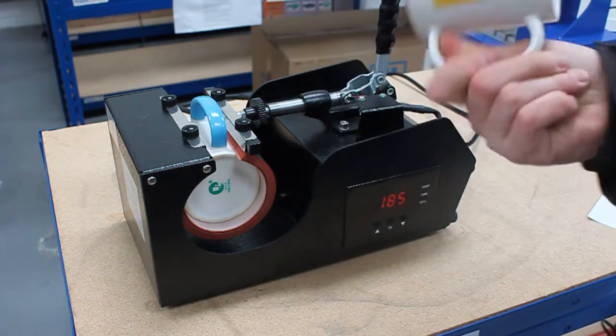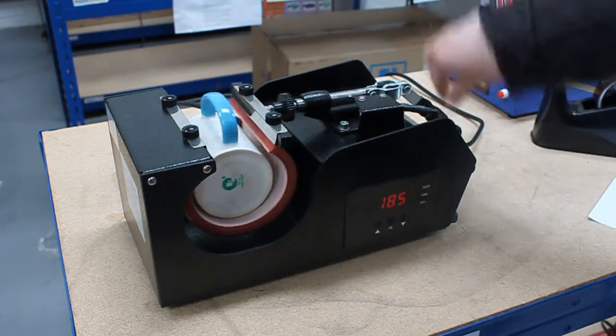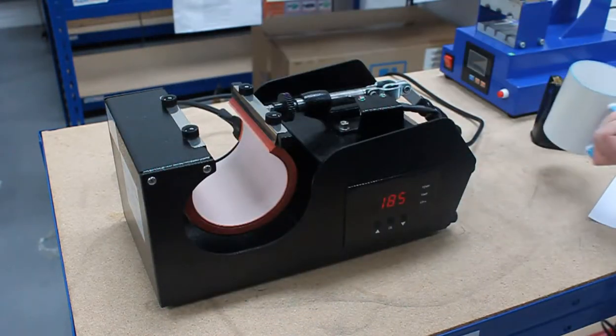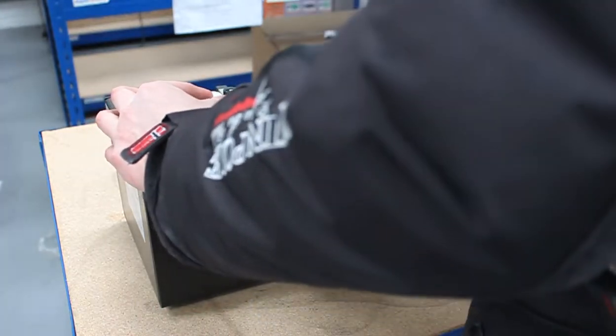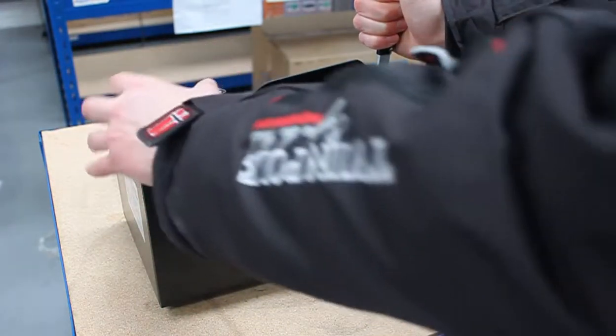Once you have your printed image on the mug, you can open up the press, take out your blank one, put in your production one. Close the press. Make sure that your mug is in the center of the element.